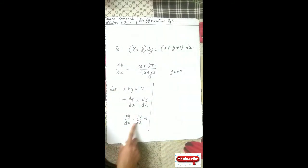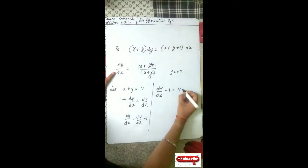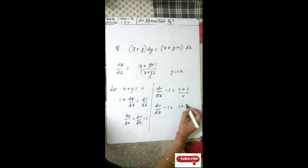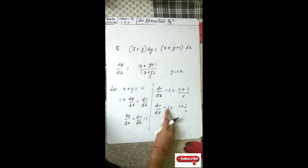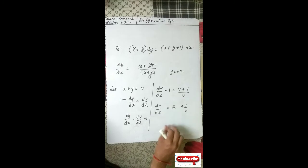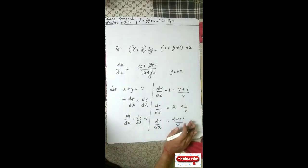So instead, substitute x plus y equal to v. Differentiating: 1 plus dy/dx equals dv/dx, so dy/dx equals dv/dx minus 1. Substituting: dv/dx minus 1 equal to (v plus 1) upon v. Separating gives 1 plus 1/v. Taking minus 1 to that side: dv/dx equals 2 plus 1/v, or equivalently (2v plus 1) upon v times dv/dx.